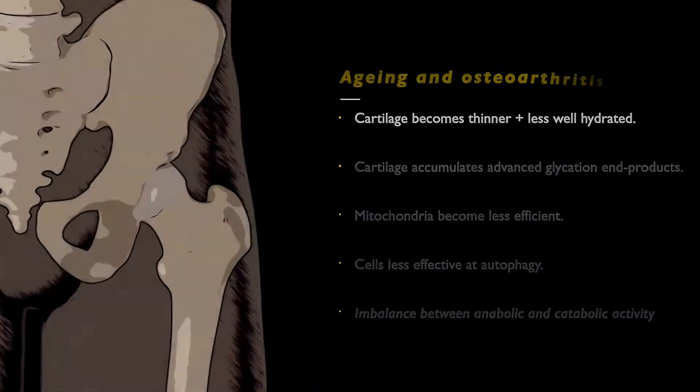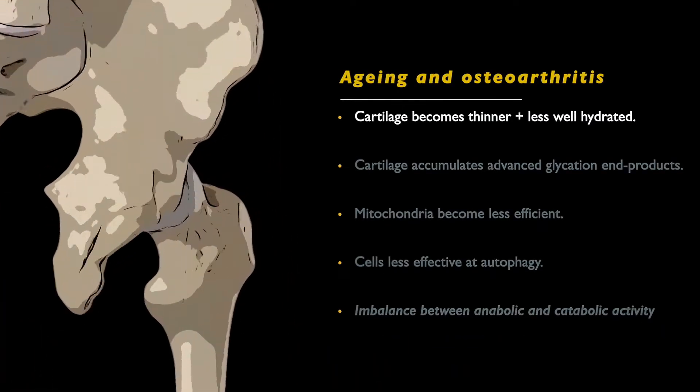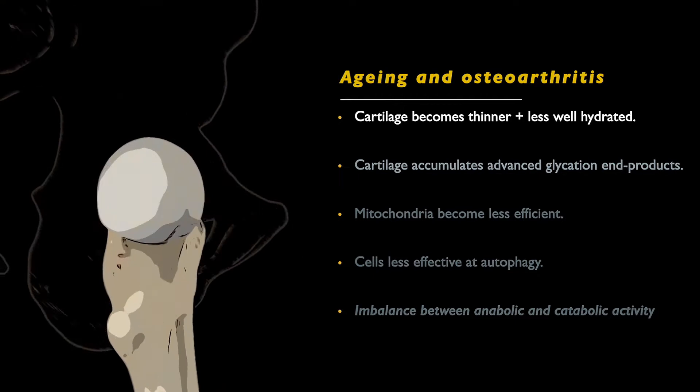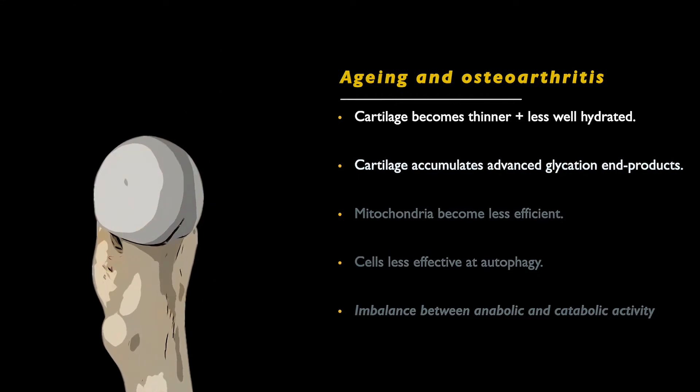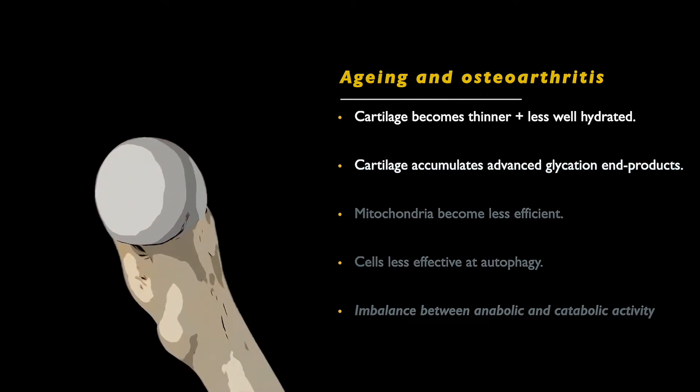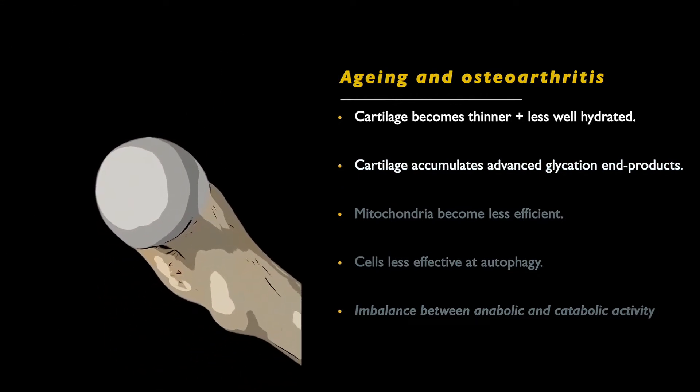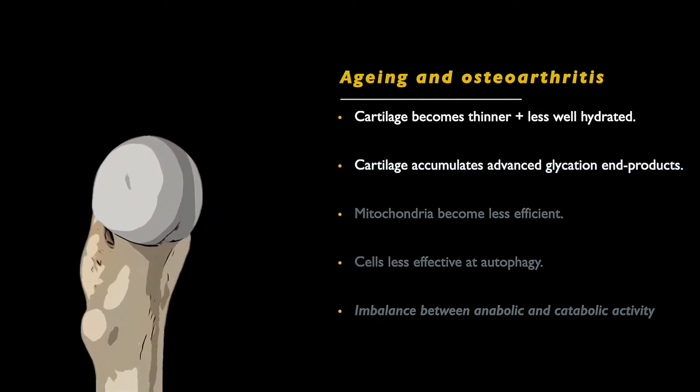As we age, articular cartilage becomes thinner and less well hydrated, and begins to accumulate proteins containing advanced glycation end products that make collagen more brittle.